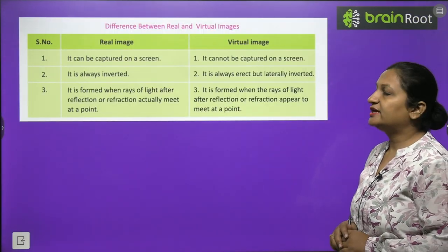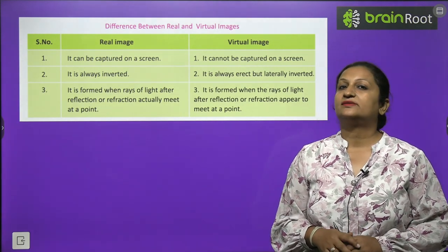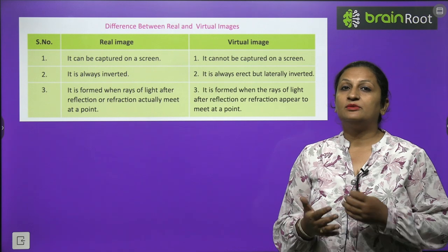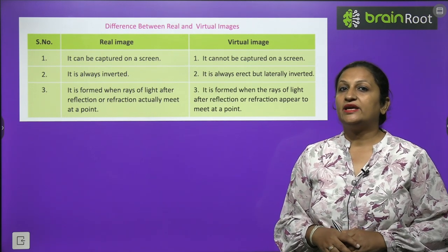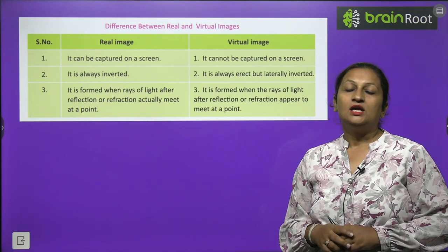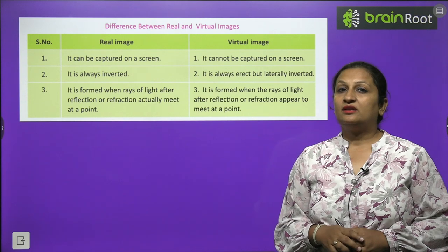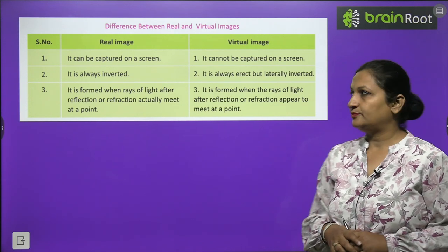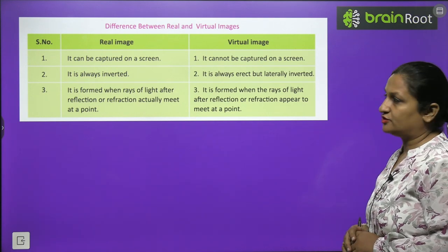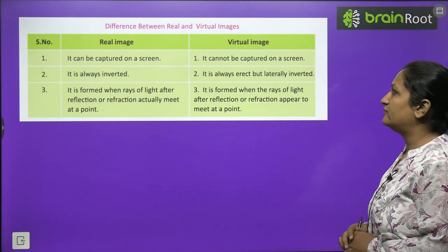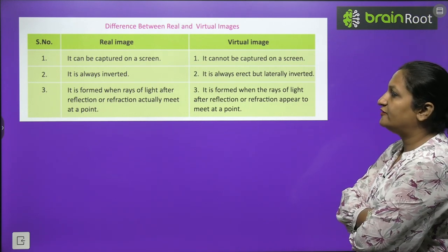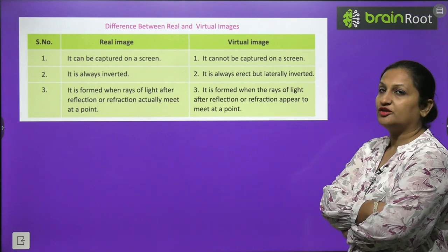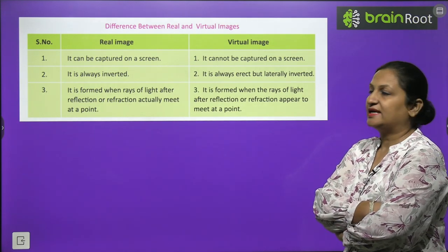Difference between real and virtual image: a real image is one that can be obtained on a screen, while a virtual image cannot be obtained on a screen. A real image is always inverted (upside down), but a virtual image is always erect (upright). A real image is formed when rays of light after reflection or refraction actually meet at a point. A virtual image is formed when rays of light after reflection or refraction appear to meet at a point. A virtual image is always erect but laterally inverted.